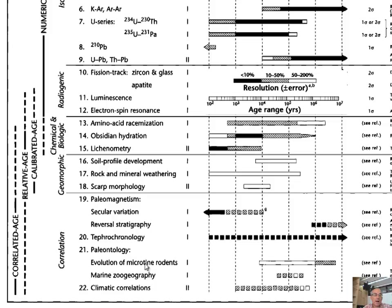Magnetostratigraphy works best with reversals; secular variation in sediments is harder but can be done. Basalts are full of iron-rich minerals that align with the magnetic field as they cool. You can correlate lava flows by secular variation — even without a reversal between them, flows separated in time will have slightly different paleomagnetic vectors, allowing you to separate and correlate them.